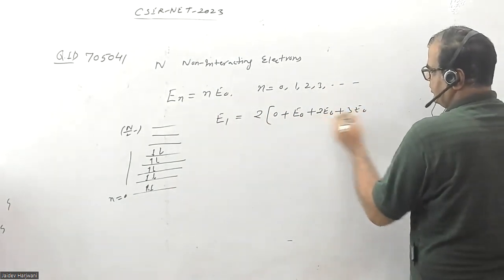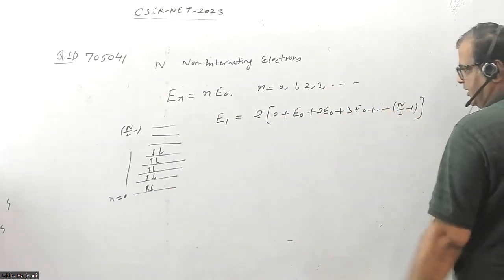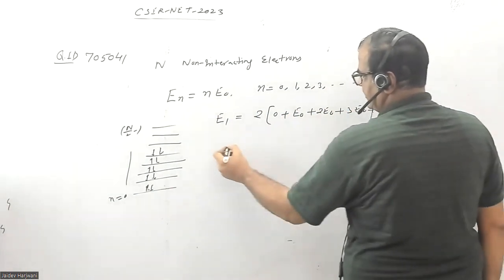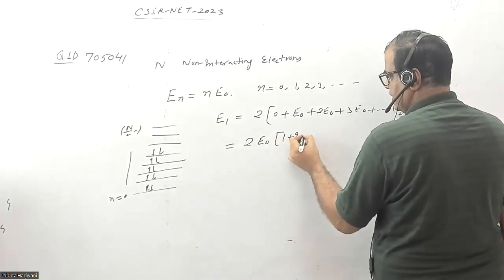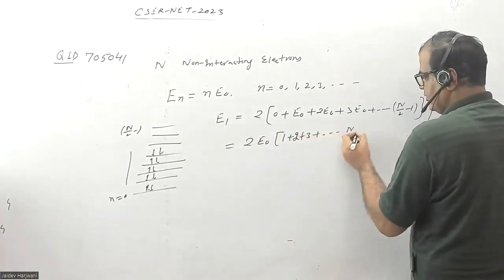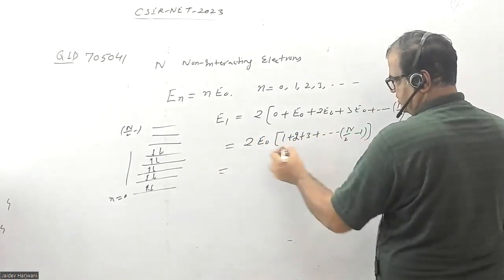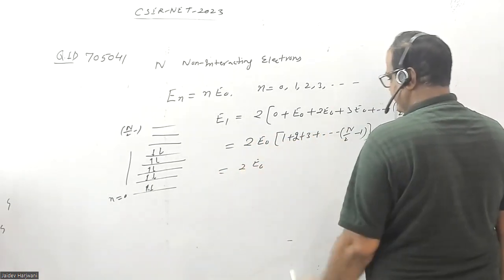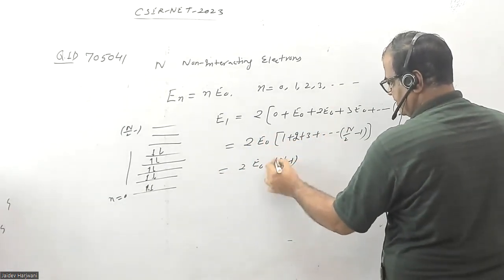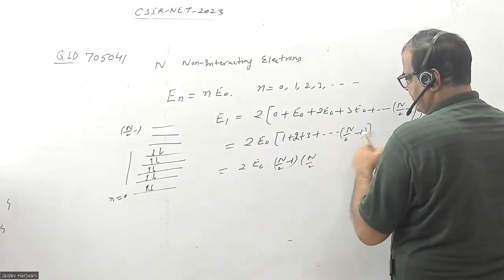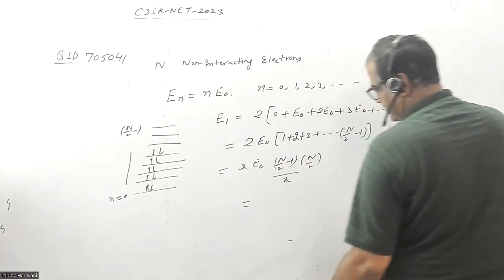It will go up to N by 2 minus 1 levels. Let me find this energy. This will be 2E0 times (1 plus 2 plus 3 up to N by 2 minus 1). We know the sum of this series. The sum will be: number of terms is N by 2 minus 1, and N by 2 minus 1 plus 1, which becomes N by 2, divided by 2. So 2 cancels.